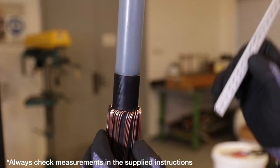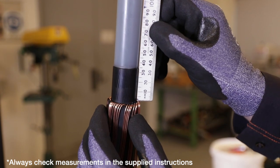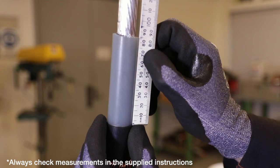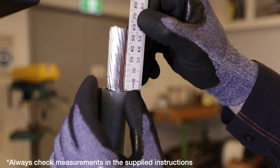Okay, just taking that insulation off to 55mm. All right, so what we should have now, 35mm from the edge of the screen cut to the Semi-Con, 85mm of insulation, and 55mm of core.